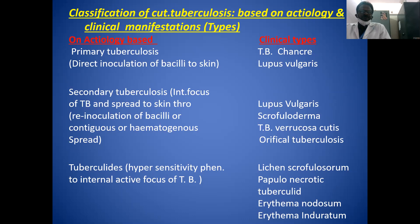The third category is tuberculids, representing a hypersensitivity response to an internal active focus of TB. The clinical types of tuberculids include lichen scrofulosorum, papulonecrotic tuberculid, erythema nodosum, and erythema induratum. These are the main classifications of cutaneous tuberculosis.